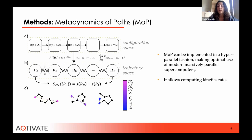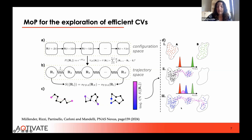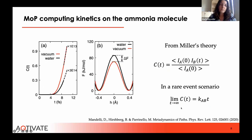Performing metadynamics simulation using this collective variable enhances the sampling of the end-to-end distance, thus increasing the probability of observing polymers corresponding to reactive trajectories of interest. The main advantages of the metadynamics of path algorithm are that it can be implemented in a hyper-parallel fashion, making optimal use of modern massively parallel supercomputers, and it also allows computing kinetic rates. So far, the algorithm has been applied only to simplified model systems.